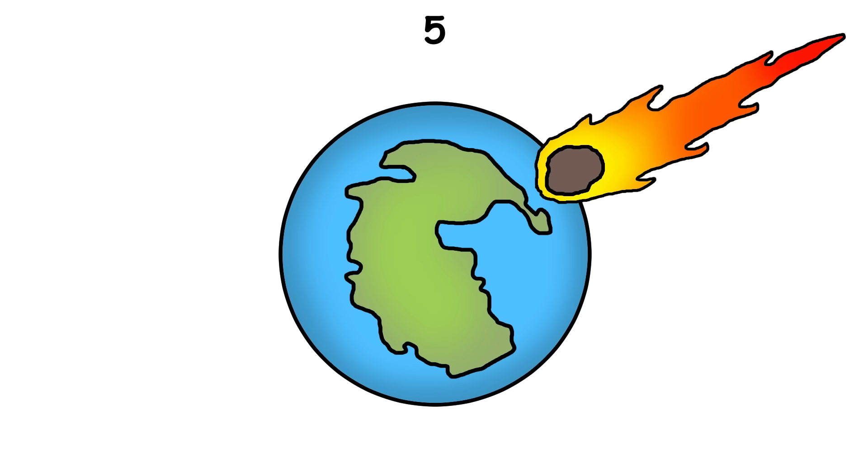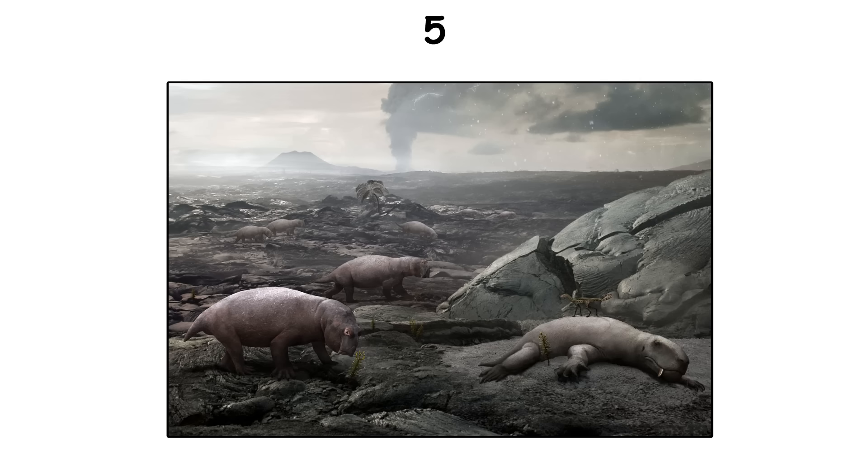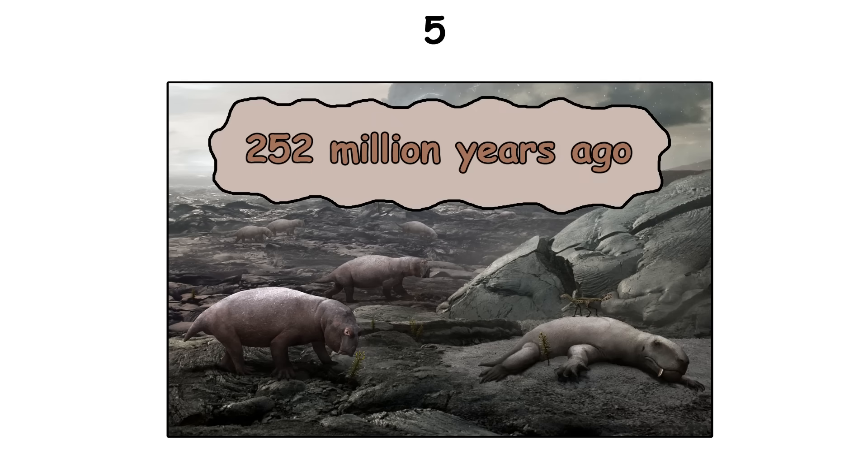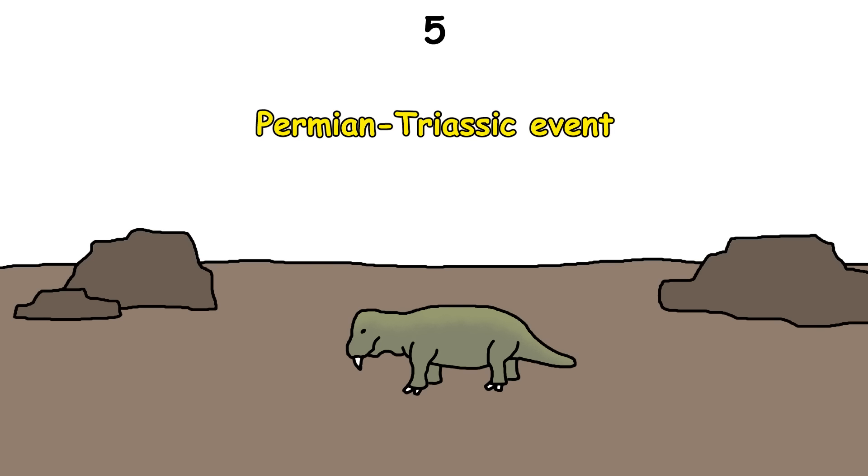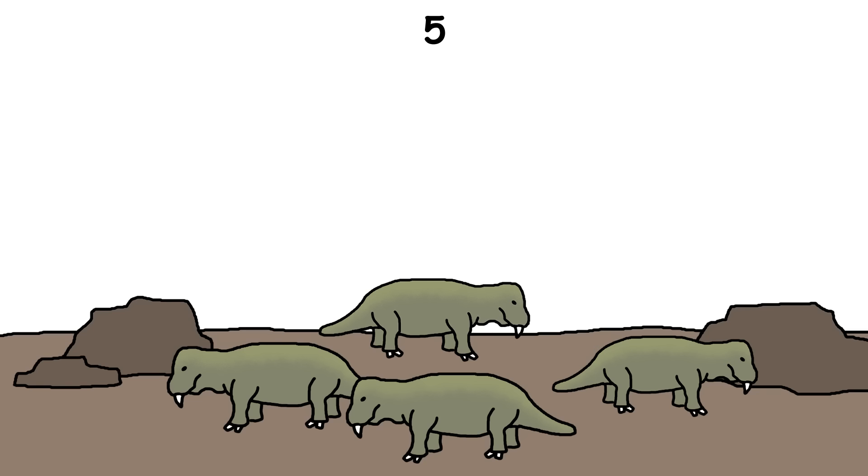The asteroid that killed the dinosaurs caused a massive extinction, but it wasn't the worst in Earth's history. The worst extinction happened about 252 million years ago during the Permian-Triassic event. It wiped out over 90% of all species on Earth, both on land and in the oceans.